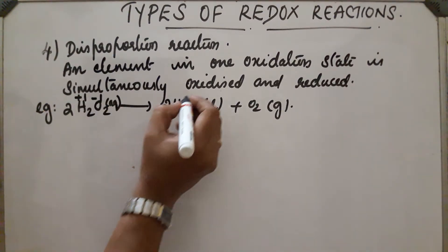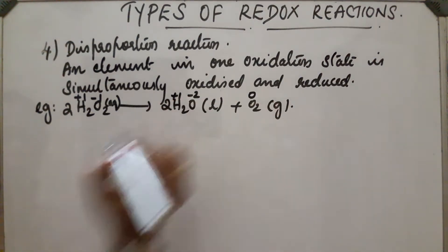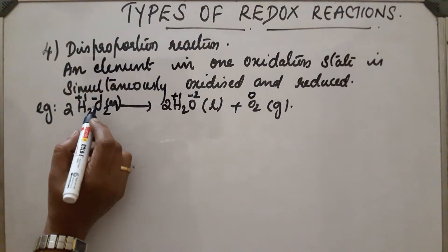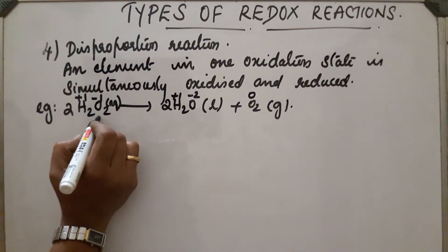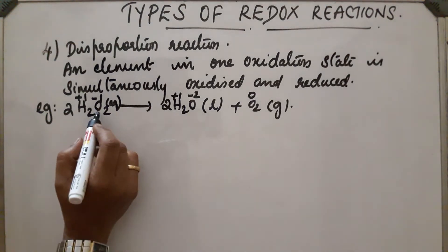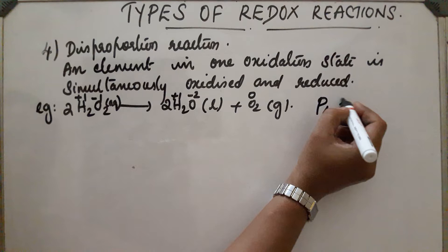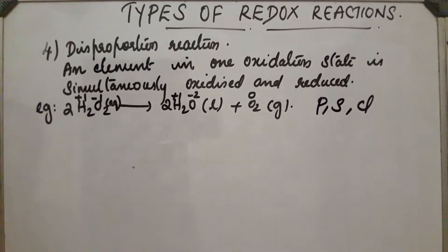The oxidation state of oxygen decreases from minus 1 to minus 2, which is a reduction reaction. It also increases from minus 1 to 0, which is an oxidation reaction. Since the element is simultaneously oxidized and reduced, such reactions are called disproportionation reactions.